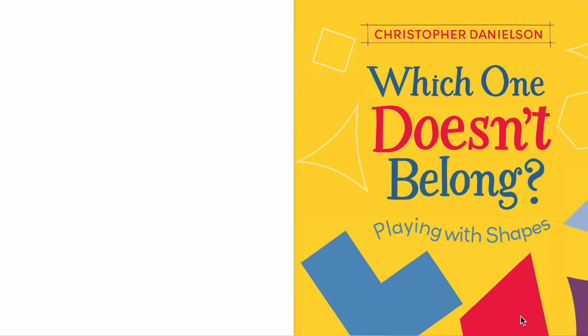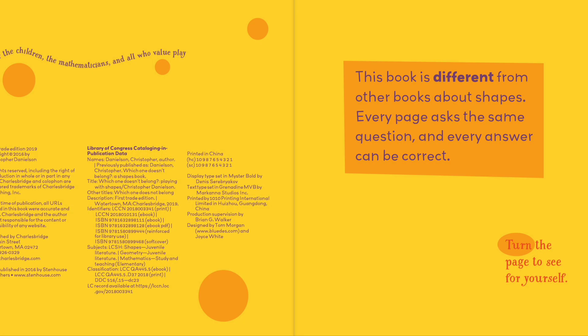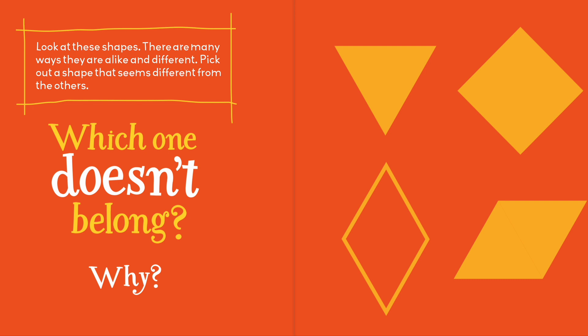Christopher Danielson, 'Which One Doesn't Belong?' — playing with shapes for the children, the mathematicians, and all who value play. This book is different from other books about shapes. Every page asks the same question and every answer can be correct. Turn the page to see for yourself. Look at these shapes — there are many ways that they are alike and different. Pick out a shape that seems different from the others: which one doesn't belong? Why?